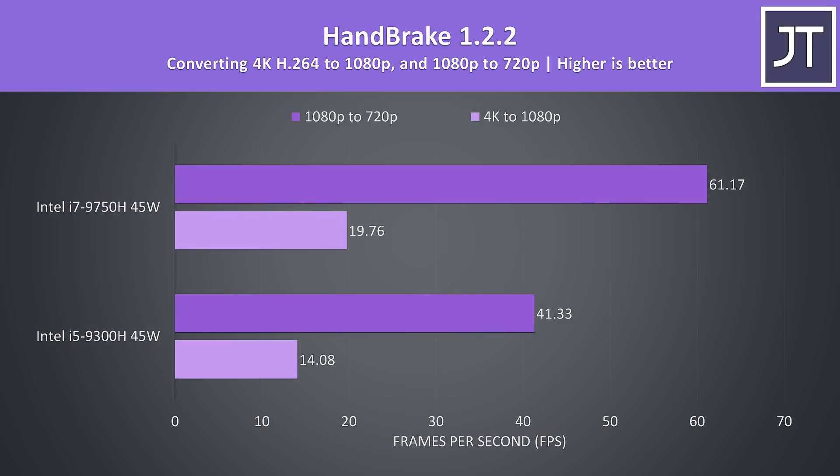Handbrake was used to convert a 4K video file to 1080p, then a separate 1080p file to 720p. This is another test that benefits greatly from CPU cores. The i7 was completing the 4K transcode 40% faster than the i5, then the i7 was 48% faster with the 1080p to 720p conversion.